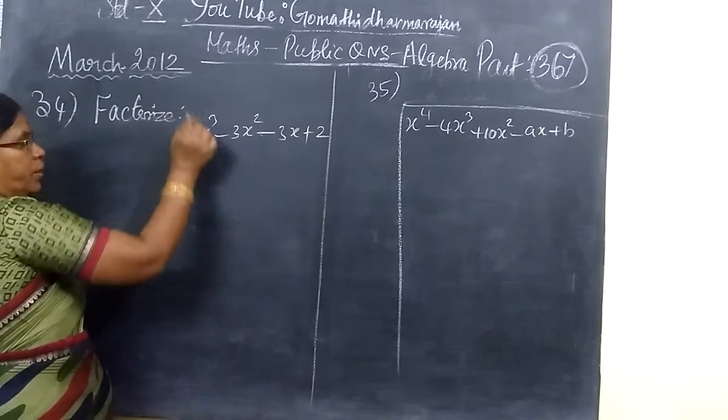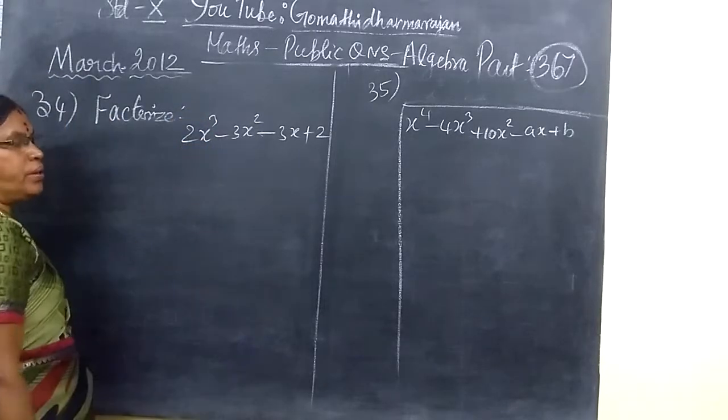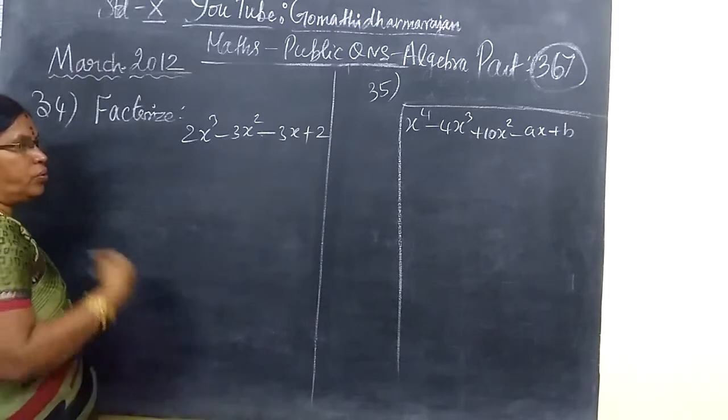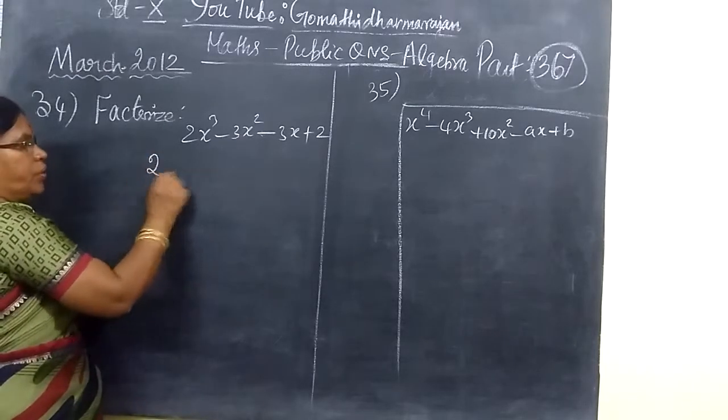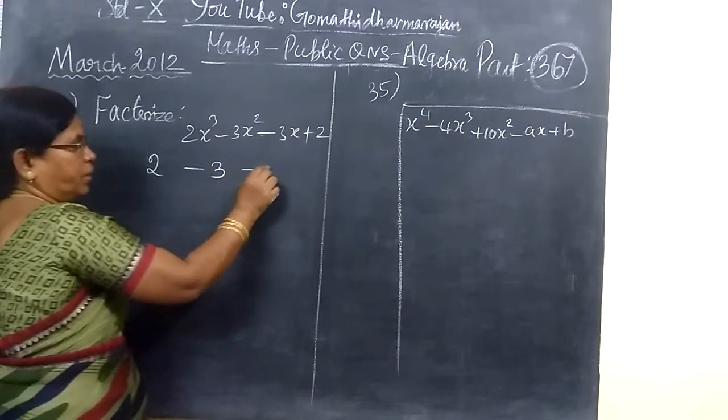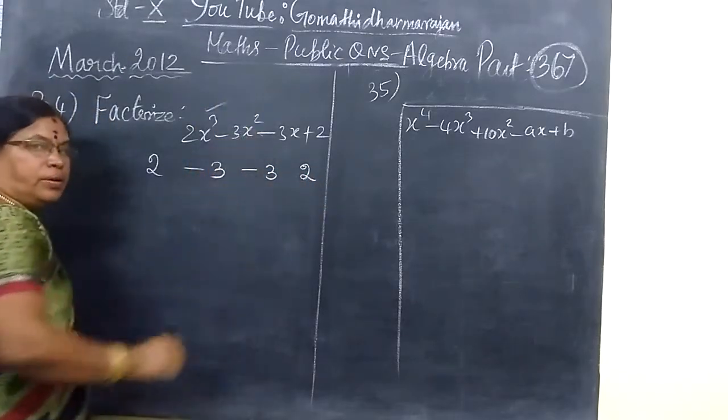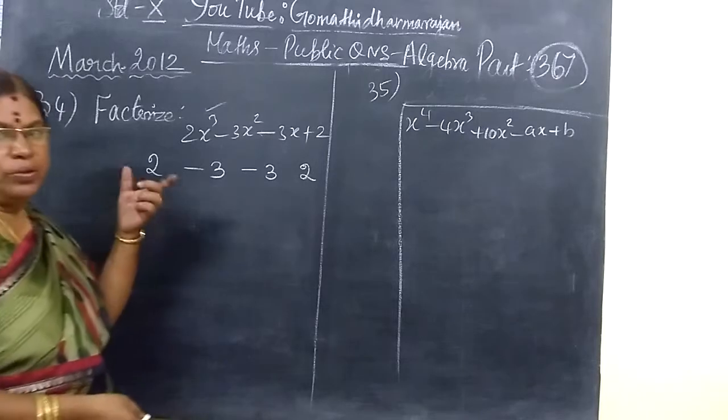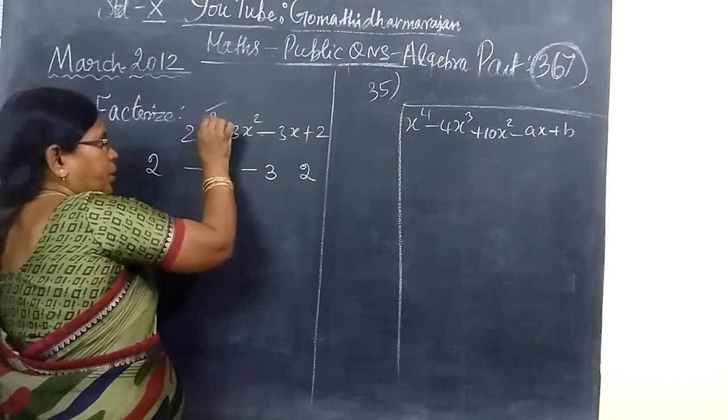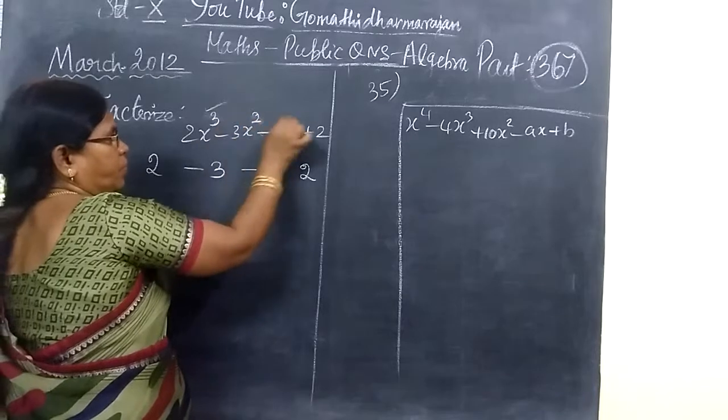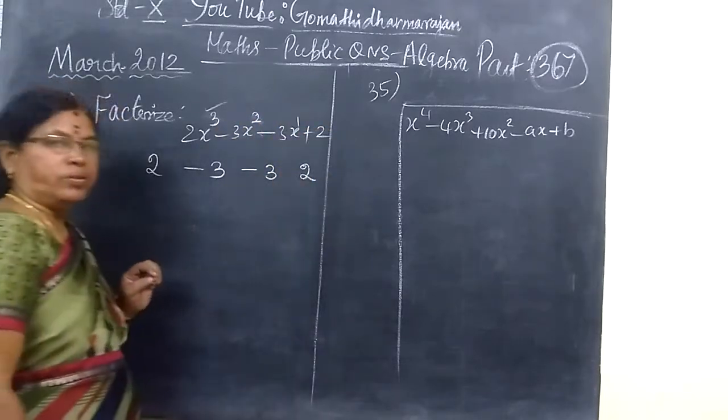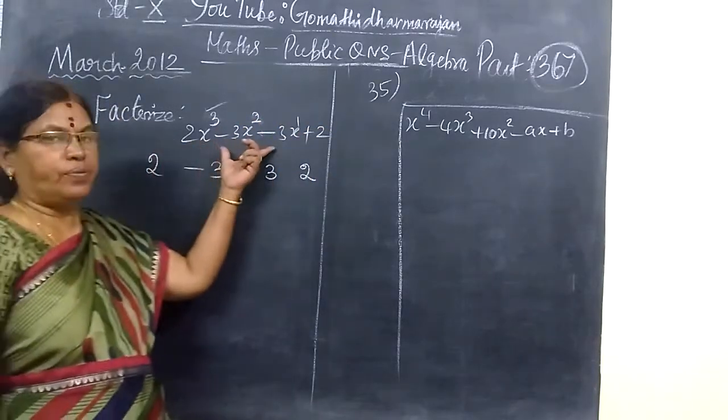Factorize 2x³ - 3x² - 3x + 2. Now we know how to write this line: 2 minus 3 minus 3, 2. Before that, in the order of standard form, power 3, power 2, power 1, then constant term. So this is standard form.